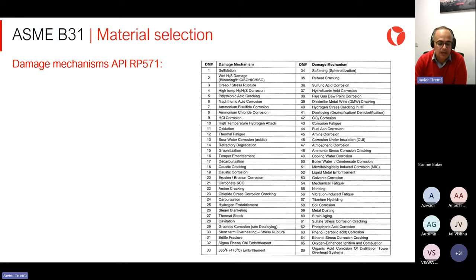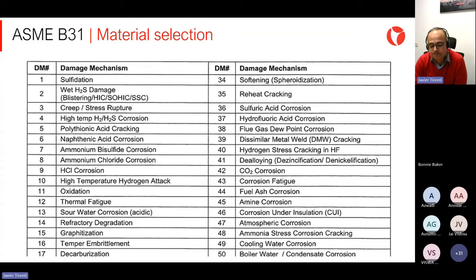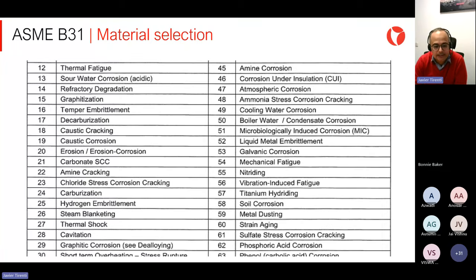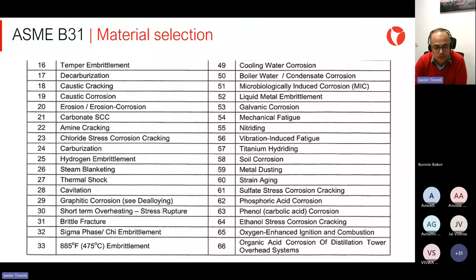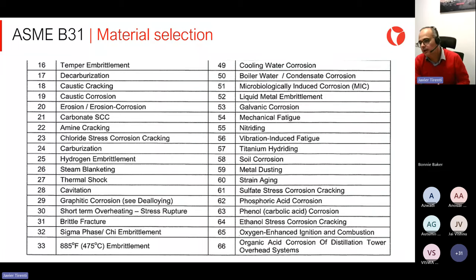In API RP 571, we are going to find all the damage mechanisms: sulfidation, wet H2S, creep, oxidation, thermal fatigue, graphitization, thermal shock, steam blanketing, soil corrosion — and we could be speaking for a very long time about damage mechanisms. But that is a different topic for another session. In this case, we're just referencing this great document.